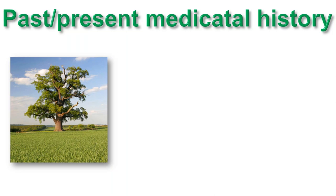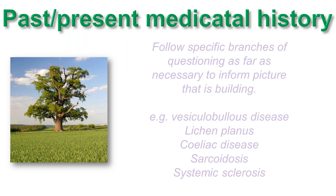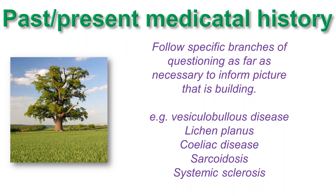After the history of the complaint, you do your medical history, which will often give you the diagnosis for whatever lesion you're looking at. They may have a vesicular bullous disease, sarcoidosis, systemic sclerosis, and so on. It's a bit like the old BSP oak tree — you follow a line of questioning, follow that branch until you get your diagnosis or come back to the main trunk and go down a different branch.